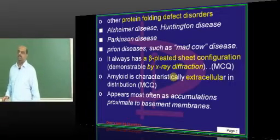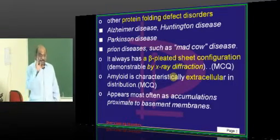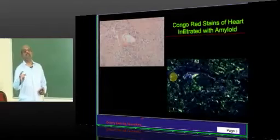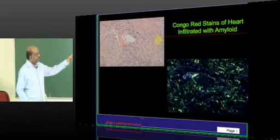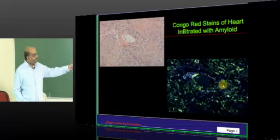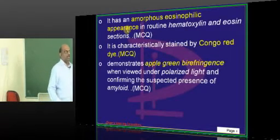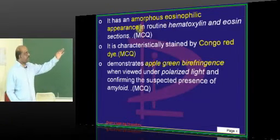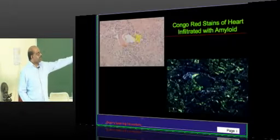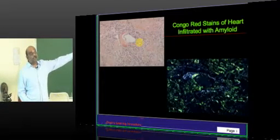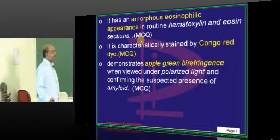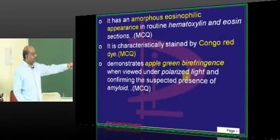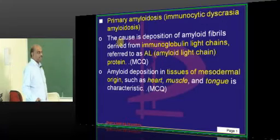Amyloid is not intracellular — extracellular deposition is the buzzword. It deposits very close to the basement membrane. You can see this in the Congo red stain of the heart infiltrated with amyloid. On hematoxylin and eosin stain, the appearance is amorphous and eosinophilic. With Congo red staining, apple green birefringence under polarized light is another important diagnostic clue.